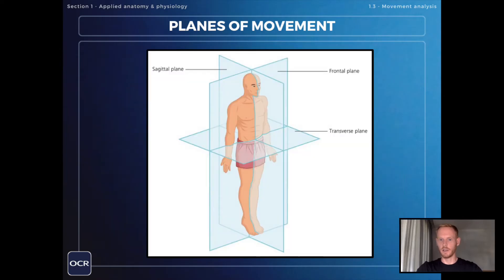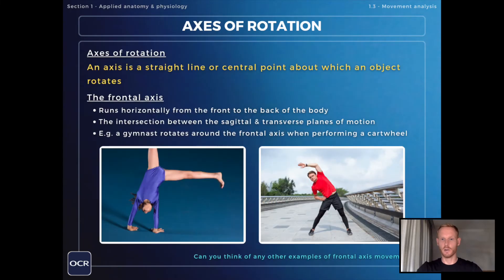Now that's everything you need to know on the planes of movement, so we'll move on to the axes of rotation. An axis is a straight line or central point about which an object rotates.